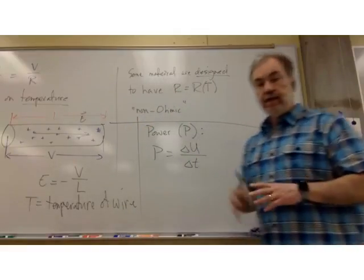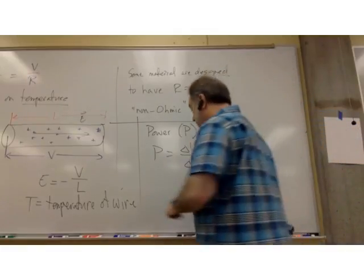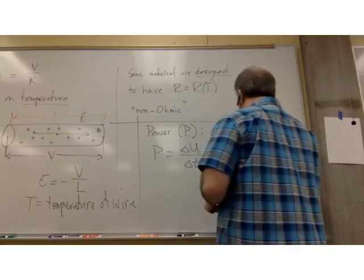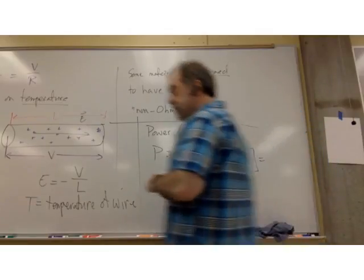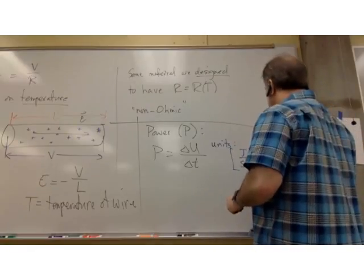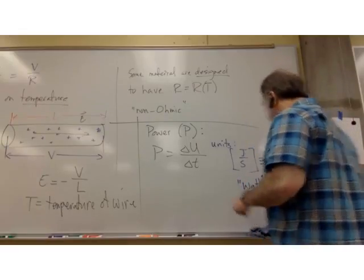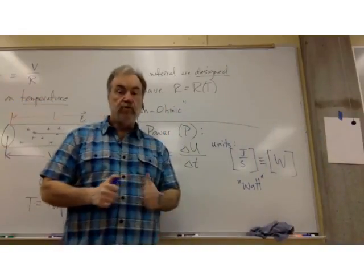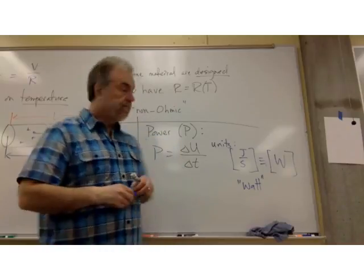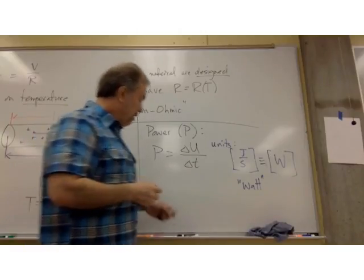And joules per second has been defined, and now you'll see why I didn't want to use work on this, because the joule per second has been defined as the watt, and its symbol is capital W. A watt is a joule per second. It's named after the American inventor and engineer James Watt, who improved steam engines, and so energy output per second.